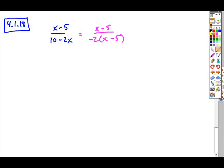And so simplifying this, now I'm able to cancel common factors. And so my answer is negative 1 half.